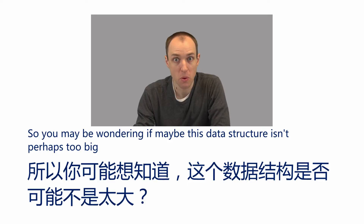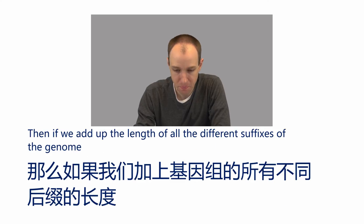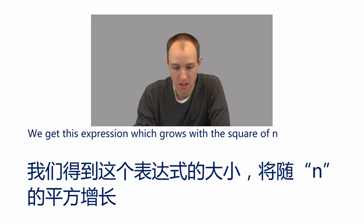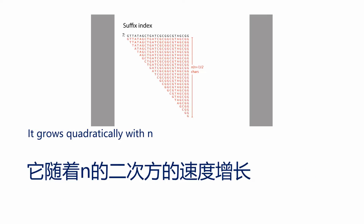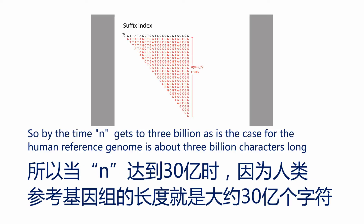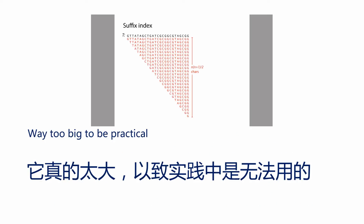You may be wondering if this data structure isn't perhaps too big, because it's organizing all of the suffixes of a genome. If your genome has length n, then if we add up the lengths of all the different suffixes, we get an expression that grows with the square of n — it grows quadratically with n. So by the time n gets to 3 billion, as is the case for the human reference genome — which is about 3 billion characters long — the number of characters in our index is going to be far too large. It's way too big to be practical.